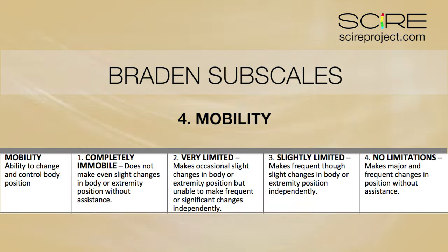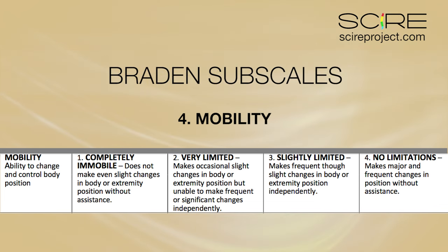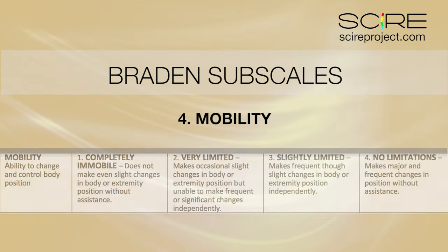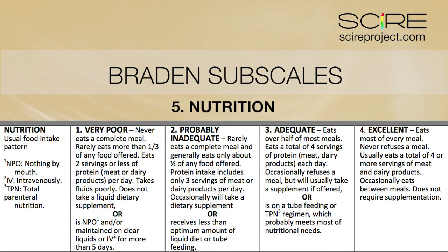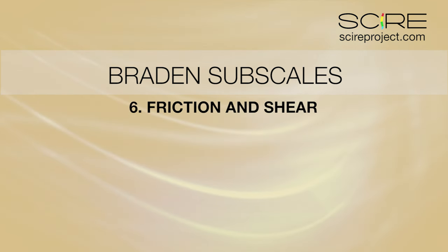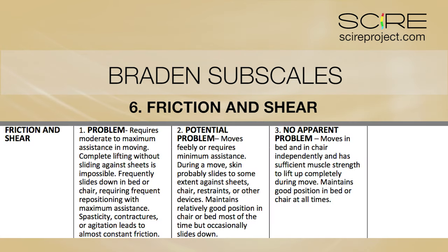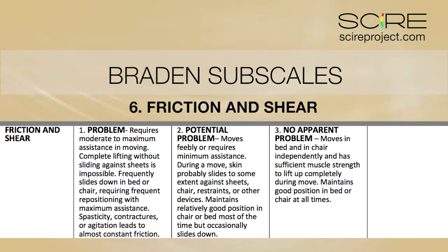Mobility looks at the capability of a client to adjust their body position independently, assessing physical ability to move and the client's willingness to move. Nutrition — eating only portions of meals or having imbalanced nutrition can indicate an increased risk for tissue breakdown. Friction and shear — the amount of assistance a client needs to move and the degree of sliding on beds or chairs can affect friction. Shear occurs when skin and bone move in the opposite direction of the support surface.